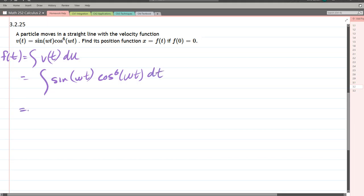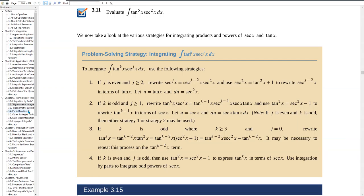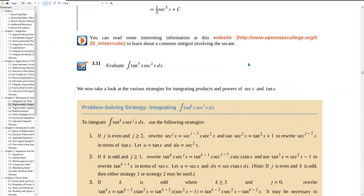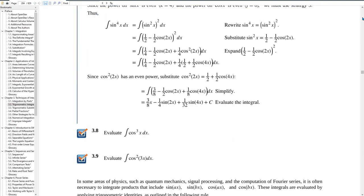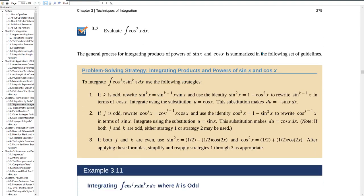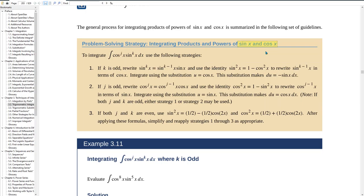Now we're going to need a u sub, and what we're gonna do is go to the textbook here. We're in section 3.2. This is the problem solving strategy for tangent secant. We're gonna scroll up, I already know it's about eight pages scrolling up or so. So here's the sine and cosine.